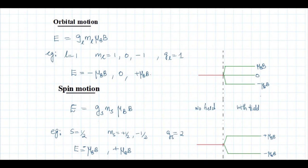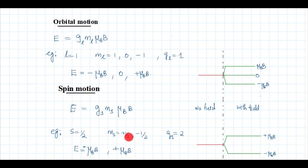For spin motion, the interaction energy is g_S m_S mu_B B, where g_S is the Landé g-factor for spin motion and m_S is the magnetic spin angular momentum quantum number. For a single electron, s = 1/2, so m_S = +1/2 and −1/2, and g_S = 2. The two energy values are +mu_B B and −mu_B B. Without a field it is a single level; with the field it splits into two.